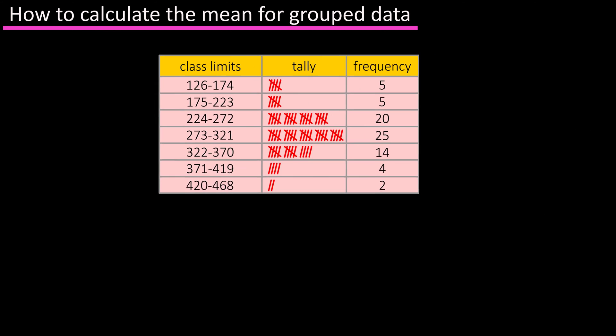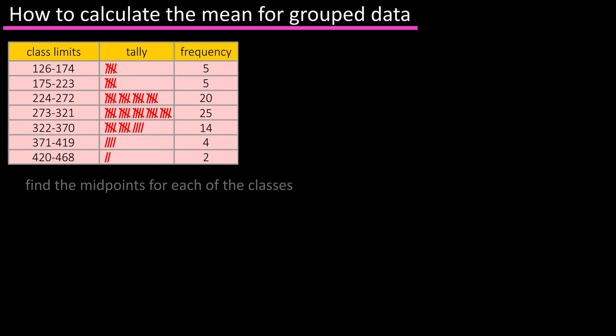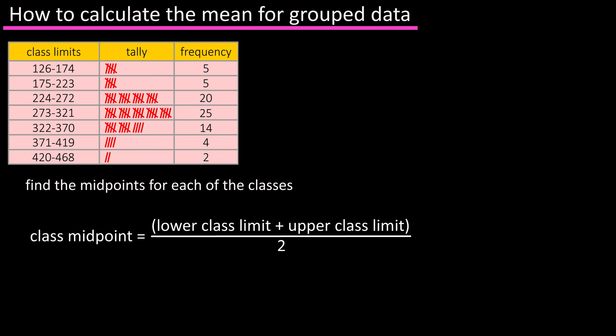So let's find the mean for the grouped data shown on the screen. The first thing that we need to do is find the midpoints of each of the classes, and the formula for finding the midpoint of a class is the lower class limit plus the upper class limit, and divide that result by two.